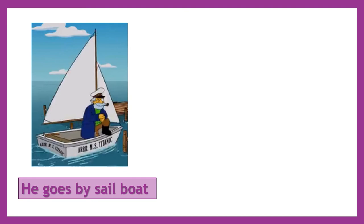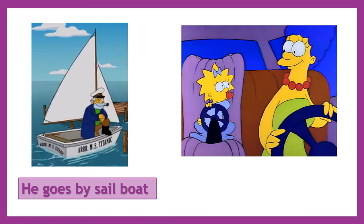Aquí, si te fijas bien, hay un velero y un hombre. Por lo tanto, vamos a utilizar el pronombre he, que es referente a hombre. Como utilizamos el pronombre he, tenemos que utilizar el verbo goes. La palabra by va a ir siempre en cualquier oración positiva. Y por último, el medio de transporte que aparece en la imagen es un velero — sailboat.